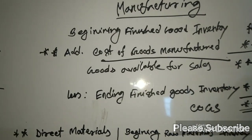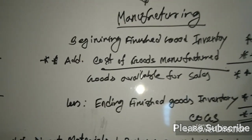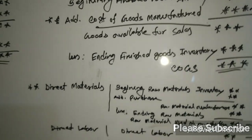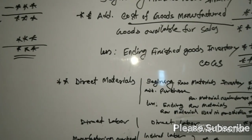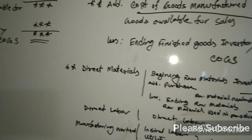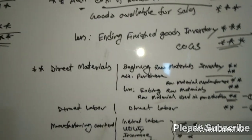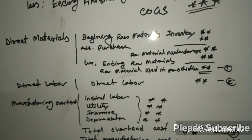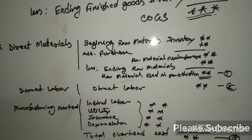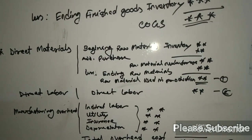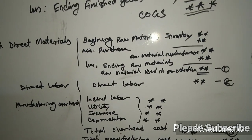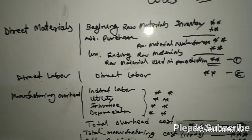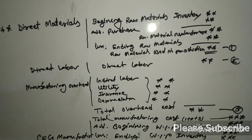The direct material is a key component: beginning raw material inventory, plus purchases, equals raw material available for use, less ending inventory, equals raw material used in production. Then add direct labor. Then add manufacturing overhead.